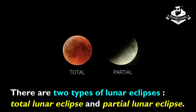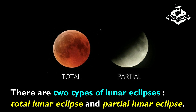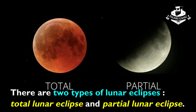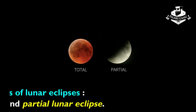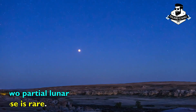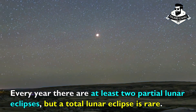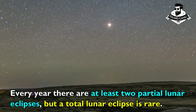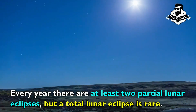There are two types of lunar eclipses: total lunar eclipse and partial lunar eclipse. Every year, there are at least two partial lunar eclipses, but a total lunar eclipse is rare.